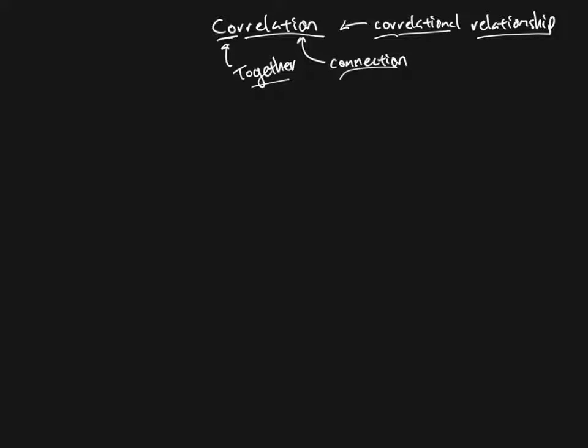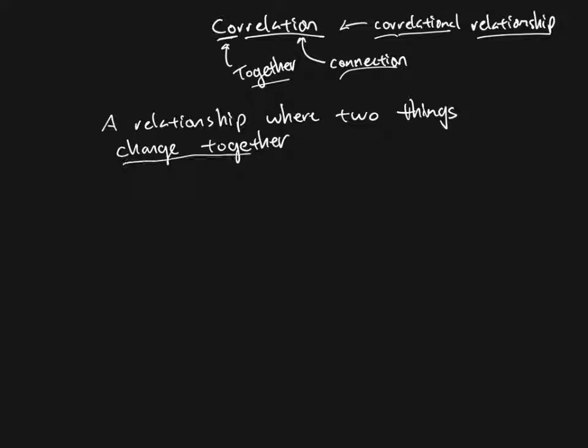Specifically, what we're saying is this is a relationship where two things, two variables, two constructs, two things change together. They change together. Another word for this that I believe we've said previously, this is co-varying. These things co-vary. This is exactly what co-vary means. It means changing together. And again, there we see that co means together.